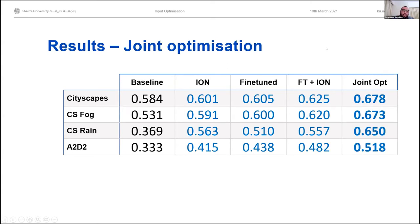Up to this point, in training the ION, the segmentation model has remained fixed with no change in its parameters. We then thought: what if we remove that constraint? So we did what we're calling joint optimization, where both networks learn to work together. We take the baseline segmentation model trained on Cityscapes, train an ION to optimize images for that model, but simultaneously the loss function is also optimizing the weights of the segmentation model. Both are learning to work with each other, and that gives another significant jump in performance.